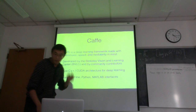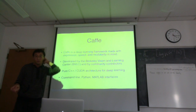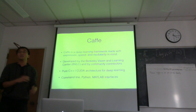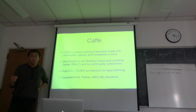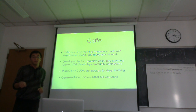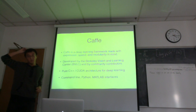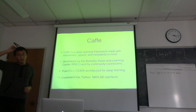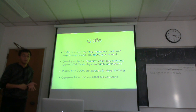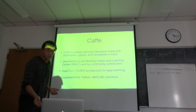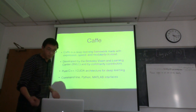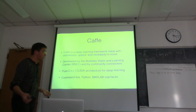We're basically using the Caffe package to deploy the deep convolutional neural network and extract features. Caffe is a deep learning framework developed at Berkeley by the computer vision group. It has a pure C++ architecture along with a CUDA implementation, so it has GPU acceleration. It's very easy to use and has Python and MATLAB interfaces.